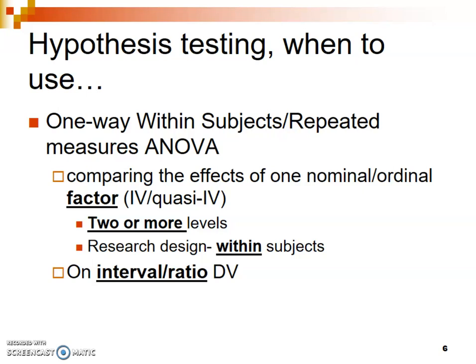An important difference from Chapter 12 is that now we're using the within-subjects research design, which involves having one group of people doing the study multiple times - each person does each level of your independent variable. We're comparing two or more levels on an interval or ratio dependent variable, meaning whatever your dependent variable is, it's measured on a numerical scale.